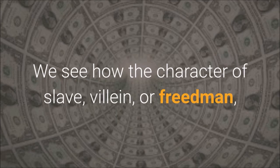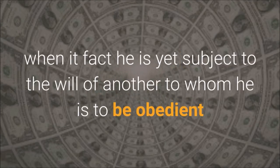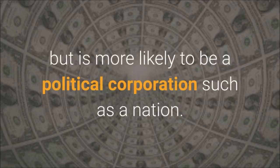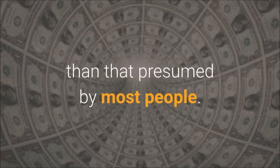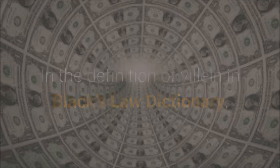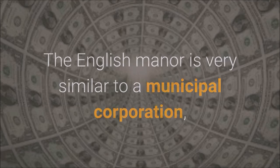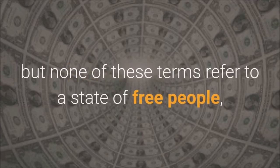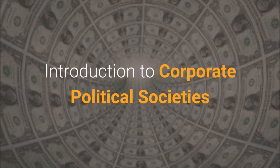We see how the character of slave, villain, or freedman — which is to say the slave in the character of a person — could easily be mistaken as one being actually free, when in fact he is yet subject to the will of another to whom he is to be obedient and show gratitude. The authority over a freedman, villain, or slave person need not be a man but is more likely to be a political corporation such as a nation. I should insert here that the meaning of the term nation is very different than that presumed by most people. In the definition of villain in Black's Law Dictionary, 7th edition, we find a person is attached to a manor. The English manor is very similar to a municipal corporation, which is actually a body politic and corporate. None of these terms refer to a state of free people, but rather to a society of slaves. Do you care to know how you became a slave?